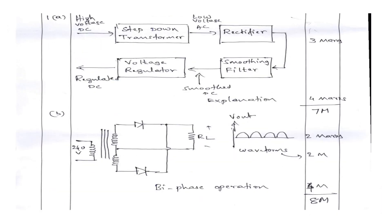For the DC power supply block diagram question, you will draw the block diagram and explain each block: the step-down transformer, rectifier, voltage regulator, and smoothing filter. The block diagram carries three marks and the explanation carries four marks, totaling seven marks.